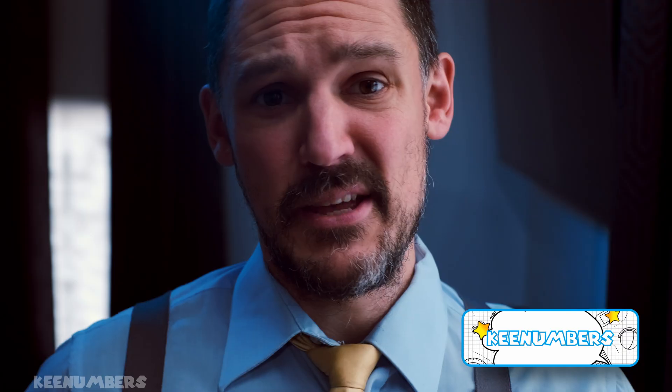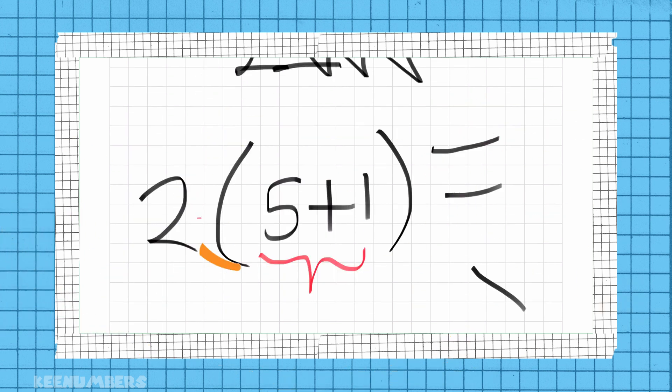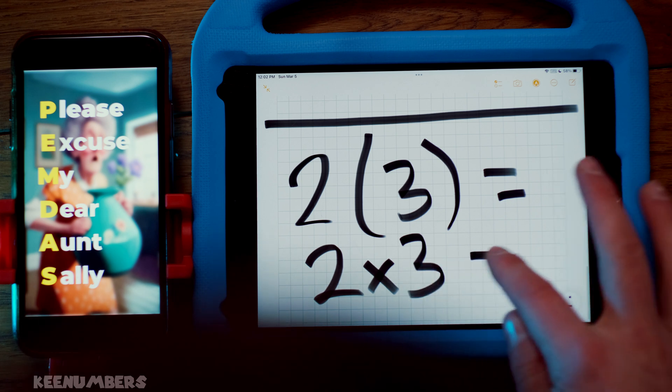P for parentheses. That means multiplication, but that could also mean just focus on what's inside the parentheses. What the deuce? Yeah, 2 parentheses 3, that just means 2 times 3, or 6.